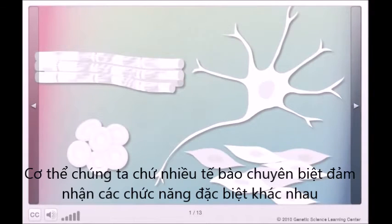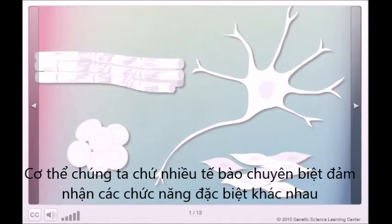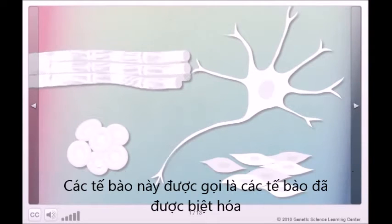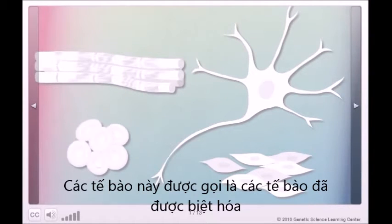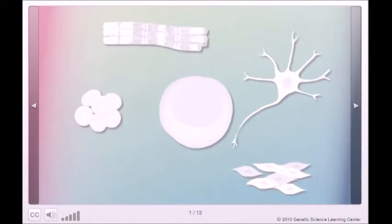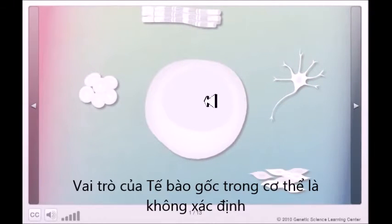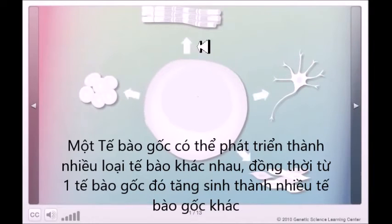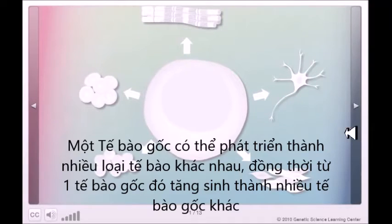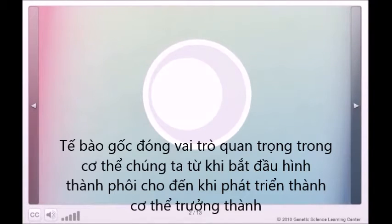Our bodies contain many specialized cells that carry out specific functions. These specialized cells are called differentiated cells. In contrast, a stem cell is undifferentiated — its role in the body is not yet determined. A stem cell can give rise to multiple cell types, including more stem cells. Stem cells play an important role in our bodies, from embryonic development through adulthood.